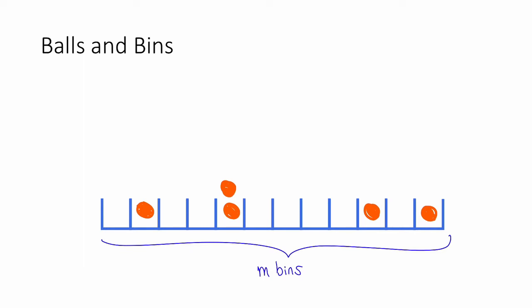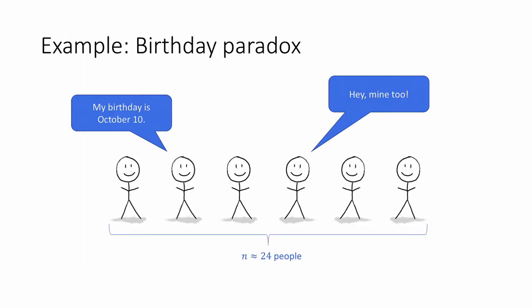This stylized balls and bins setting captures a lot of situations that come up in the analysis of randomized algorithms. One example that you may have seen is the so-called birthday paradox. Have you ever noticed that when you have not that many people in a room, it seems uncannily likely that two people share a birthday? It turns out that this is actually pretty likely whenever there are at least 23 people or so.